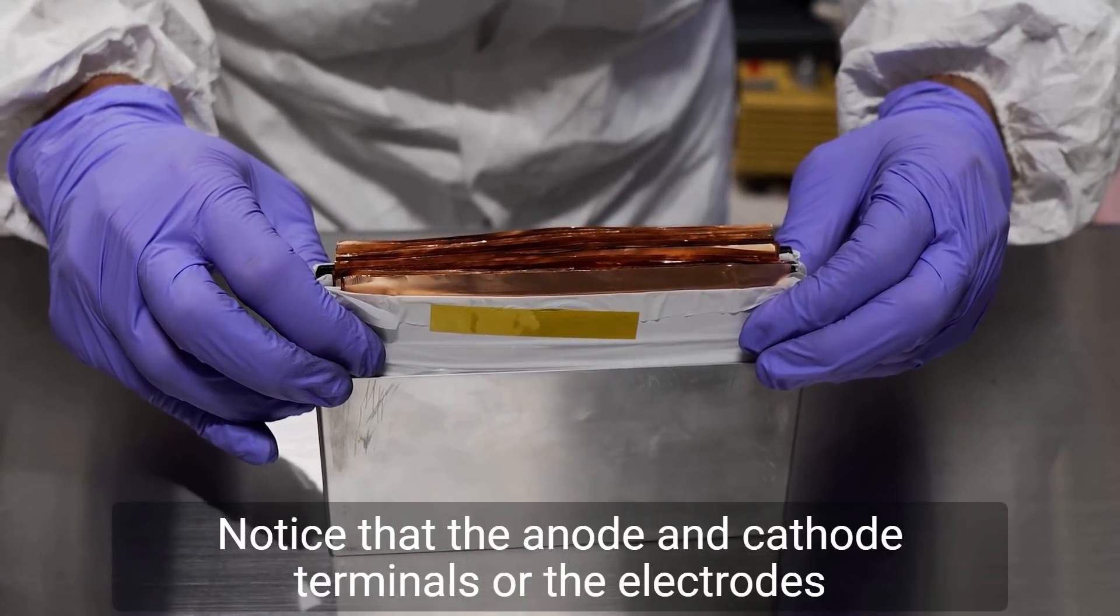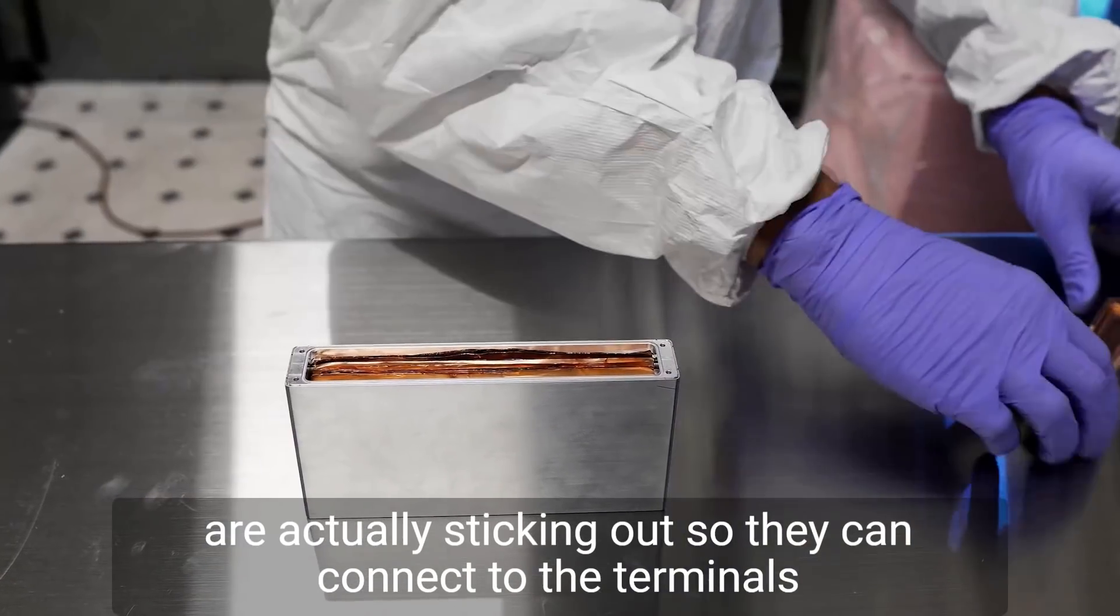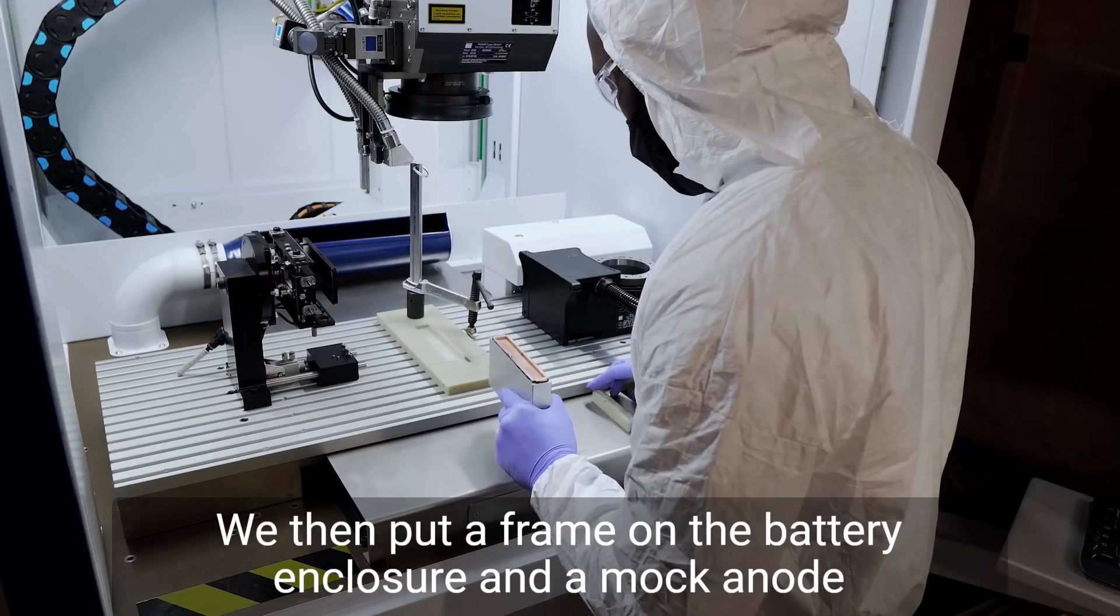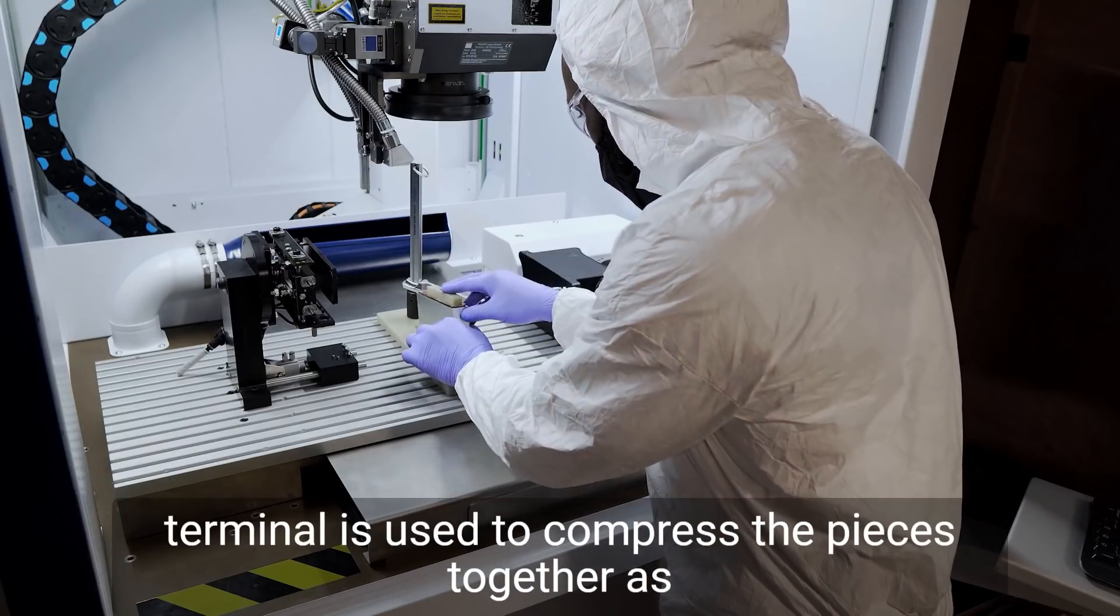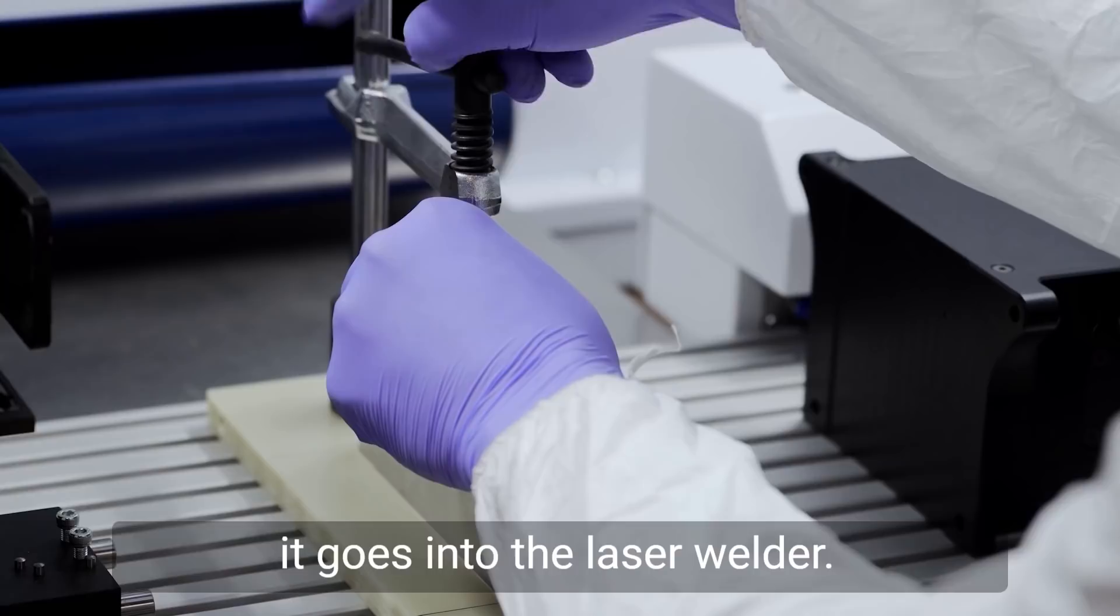Notice that the anode and cathode terminals, or the electrodes, are actually sticking out so they can connect to the terminals at the end of the cell. We then put a frame on the battery enclosure and a mock anode terminal that is used to compress the pieces together as it goes into the laser welder.